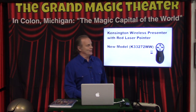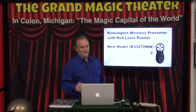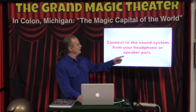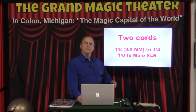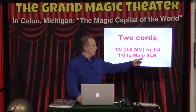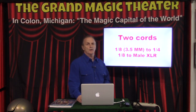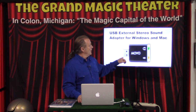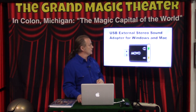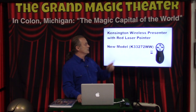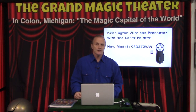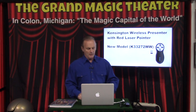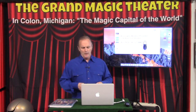So to back up: you connect the sound system from your headphone or speaker port. You carry two cords — one eighth-inch to quarter-inch for a direct box, and one eighth-inch to male XLR to go straight into a microphone cord. Just pop off the microphone, pop it on, you're ready to go. If you don't have a speaker port on your laptop, the USB external stereo sound adapter will solve that problem. And you can get yourself a nice little remote — I use a Kensington — and that is how I advance my slides.